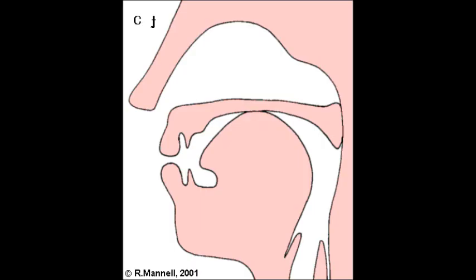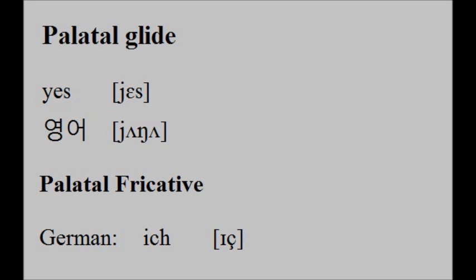Next, we discuss palatal sounds. These are made with the body of the tongue against the hard palate. Both Korean and English have the palatal glide. German has a voiceless palatal fricative, as in the word ICH meaning I.